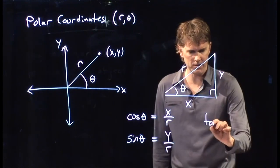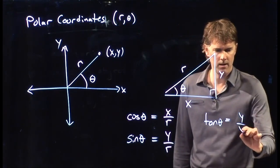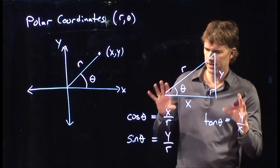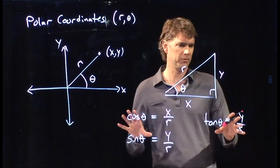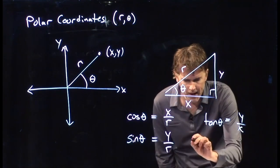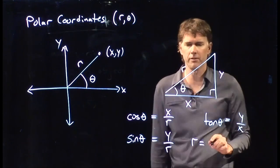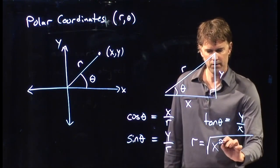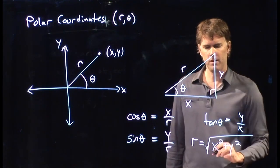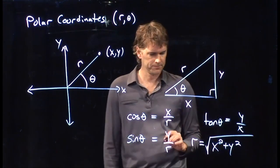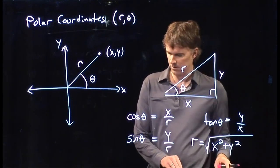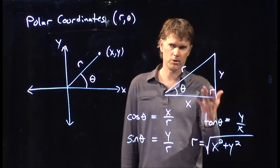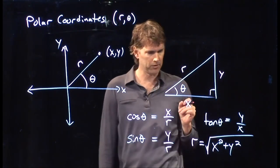And then finally tangent of theta is going to be y over x. All right. So those are our nice trig relationships for this particular triangle. But we also have Pythagoras which told us that the hypotenuse of the right triangle is the square root of the sum of the squares of the other two sides. So all those things describe how r and theta relate back to our Cartesian coordinates x and y.